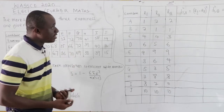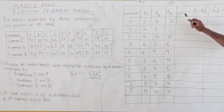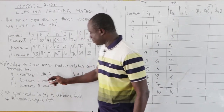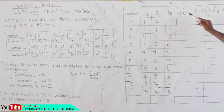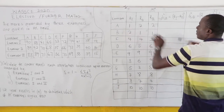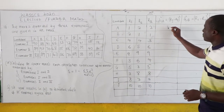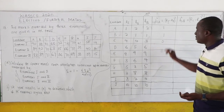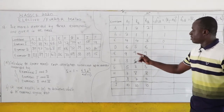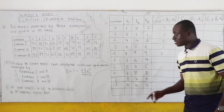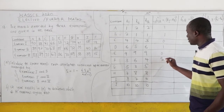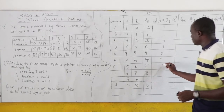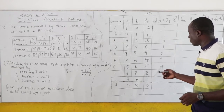Now we find the deviations for examiners 1 and 2, computing R1 minus R2 squared for each candidate. The differences are: −1 squared = 1, 1 squared = 1, 0 squared = 0, 1 squared = 1, 0 squared = 0, −3 squared = 9, 3 minus 5 gives 2 squared = 4, −1 squared = 1, and finally 1 and 0.